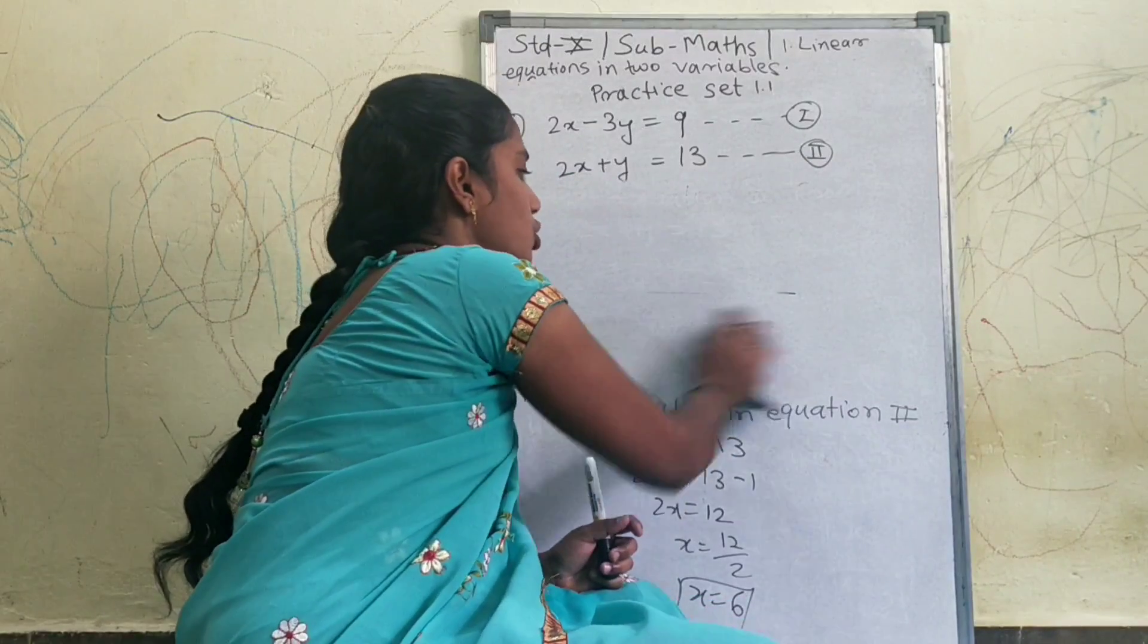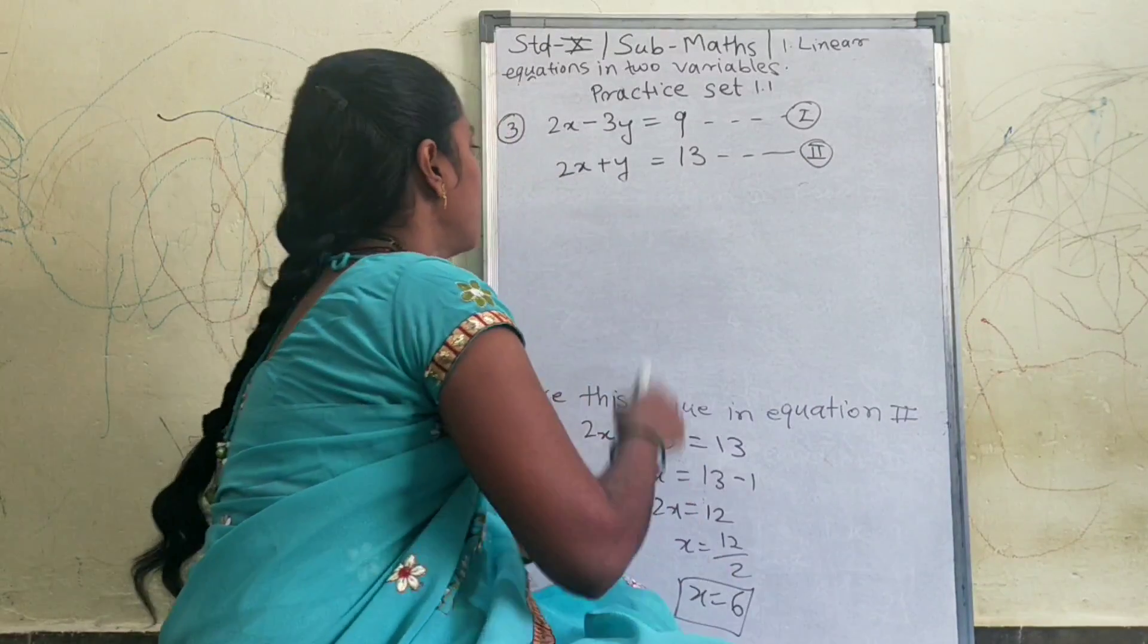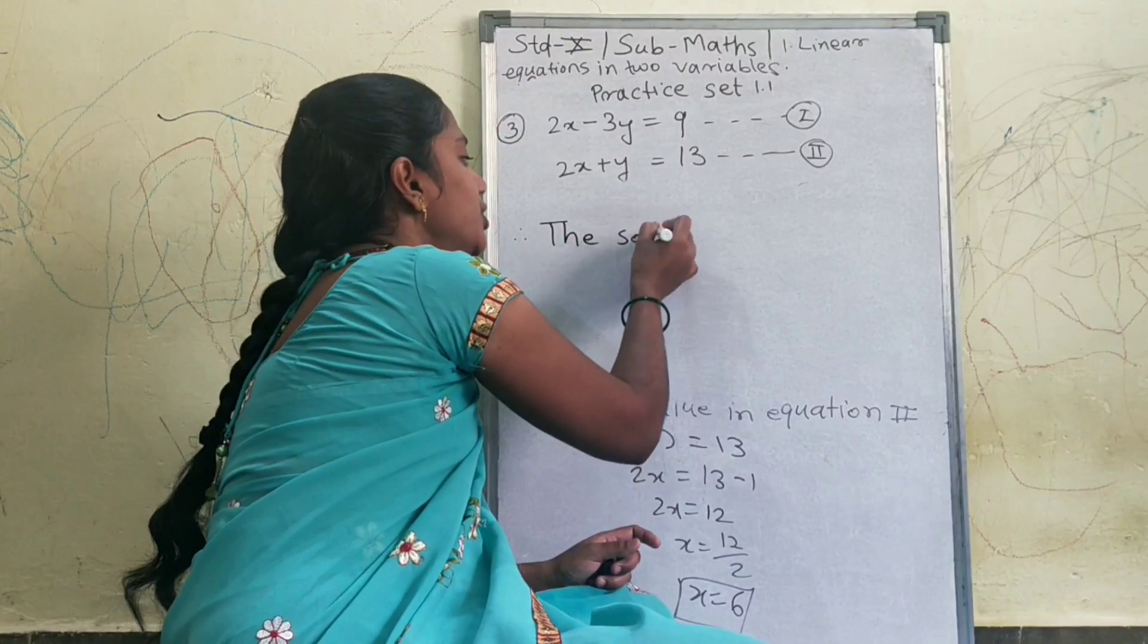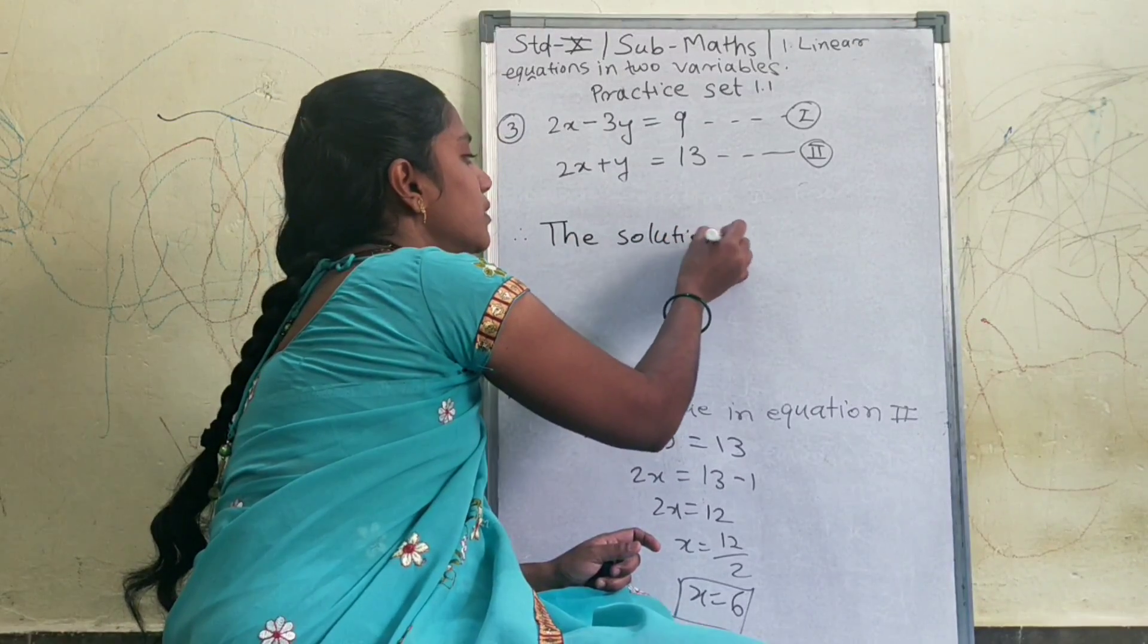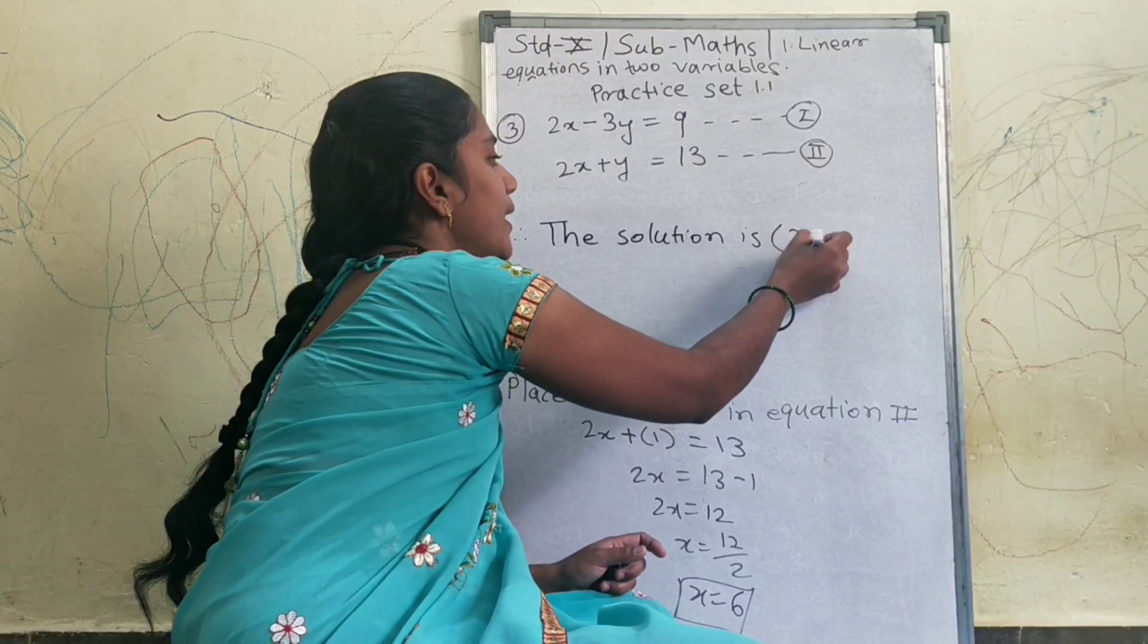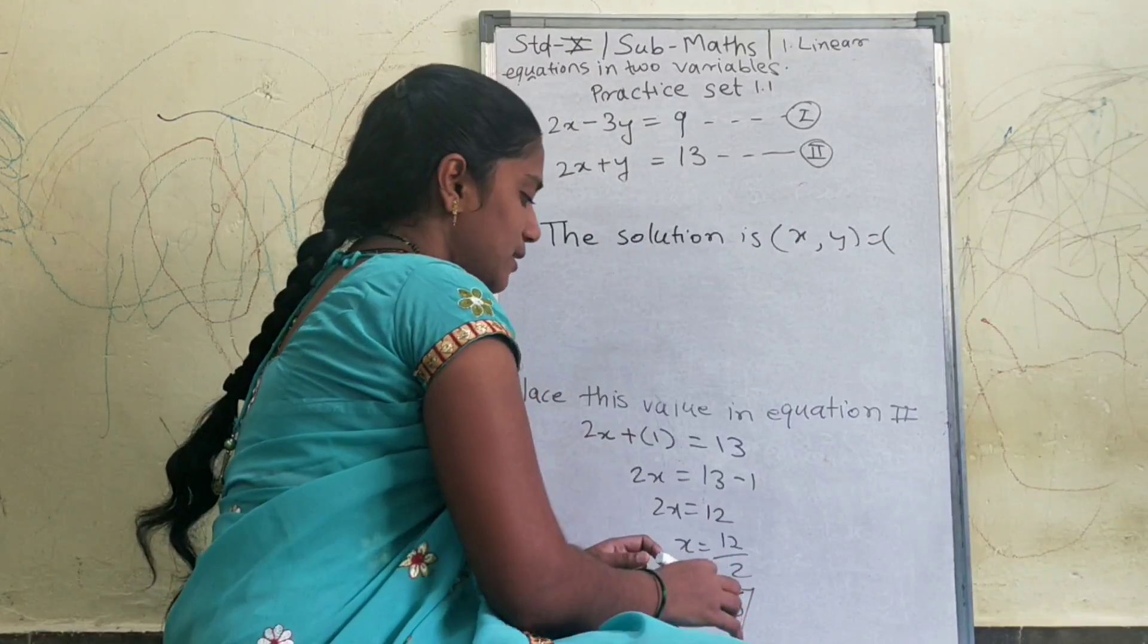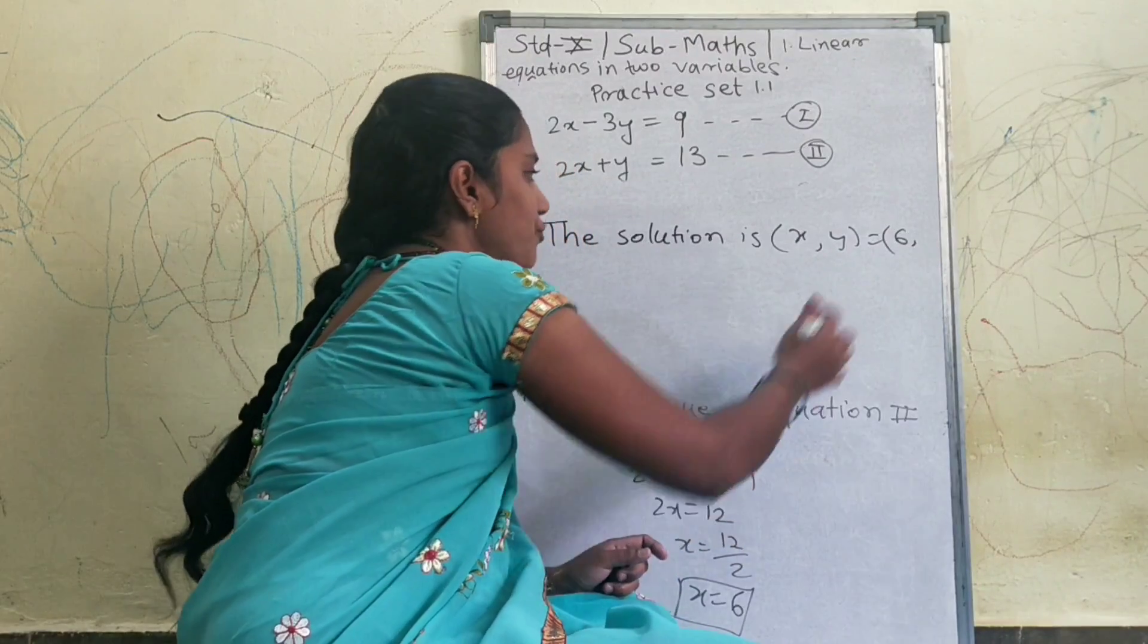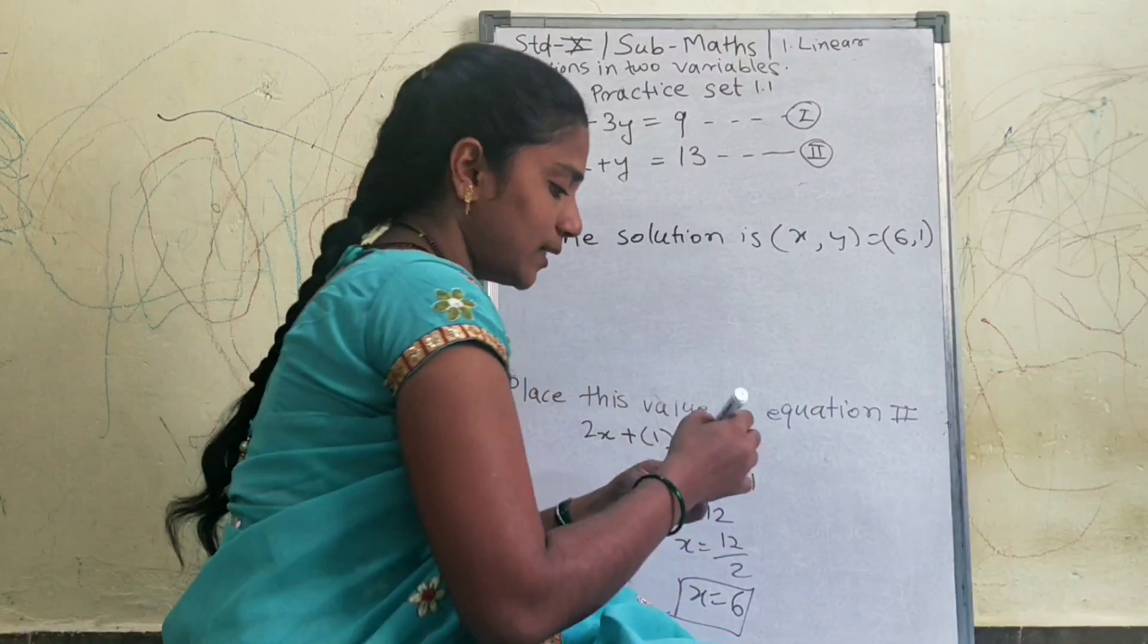I write this answer in this way. The solution, therefore the solution is x, y is equal to, x's value is 6 and the value of y is 1.